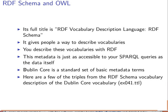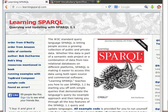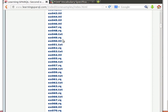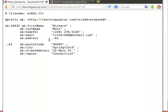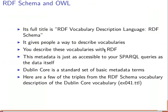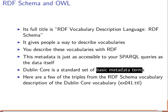Dublin Core is named after a Dublin in the United States, not Dublin in Ireland, by the way. Let's have a look at an example. The file we're using is from the examples provided by the book — it is example file EX42, not EX41. It provides a set of basic metadata terms that we can use to describe our data.